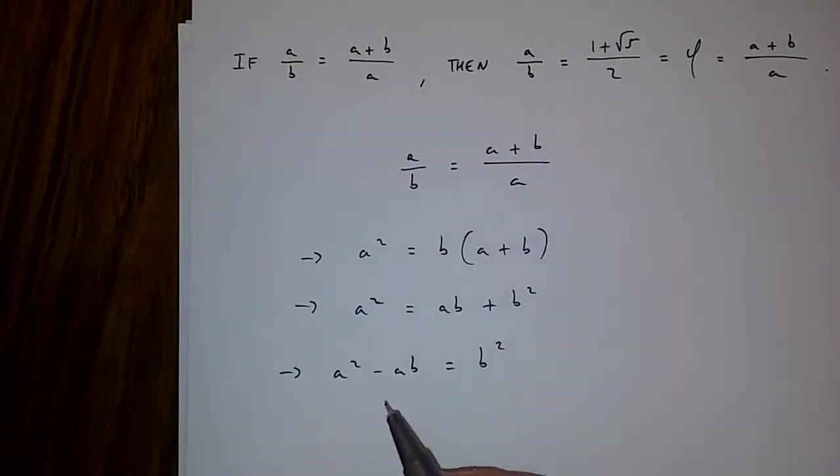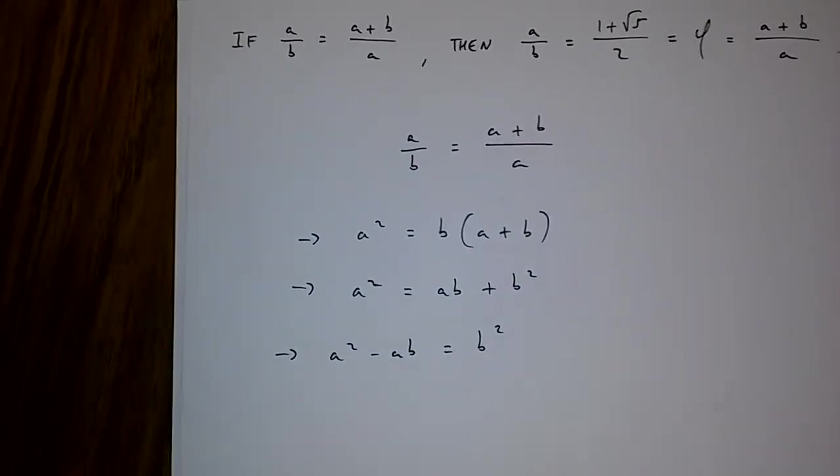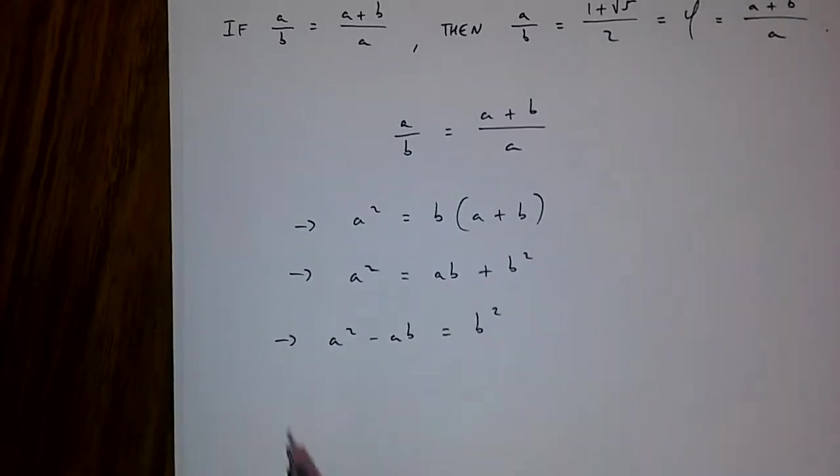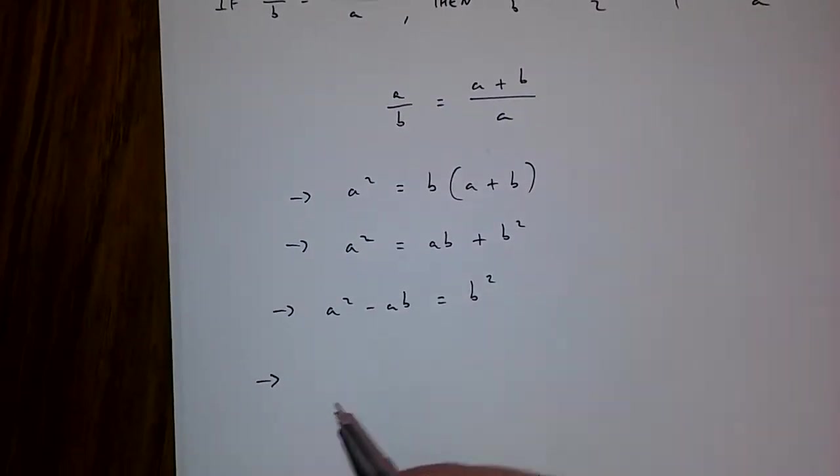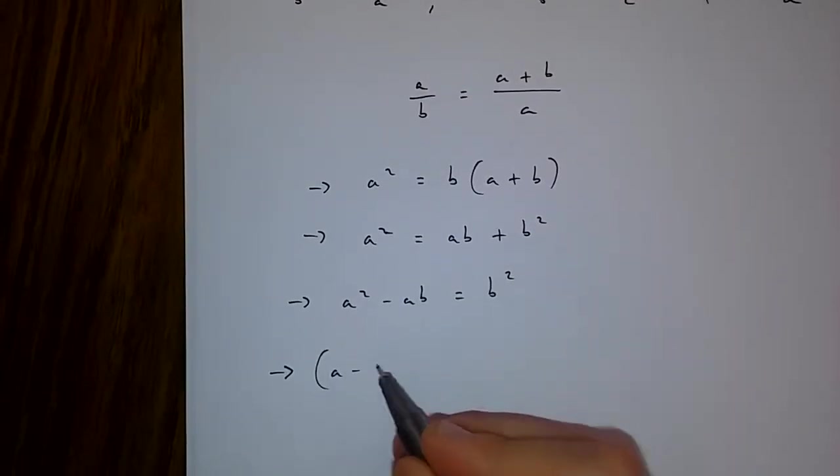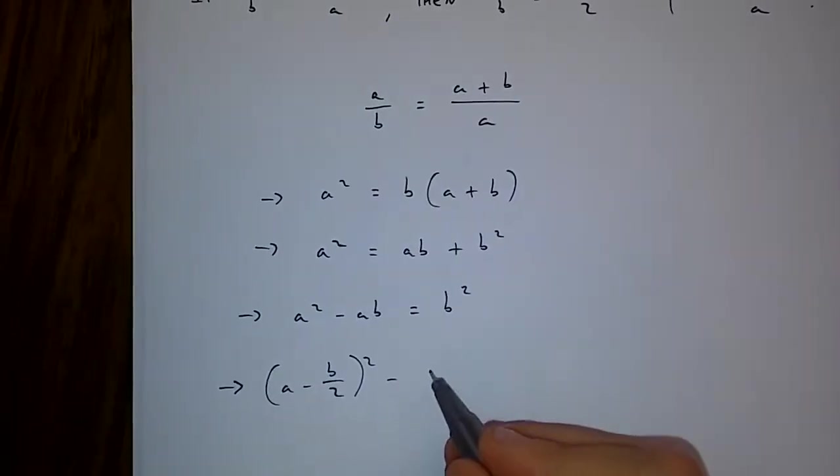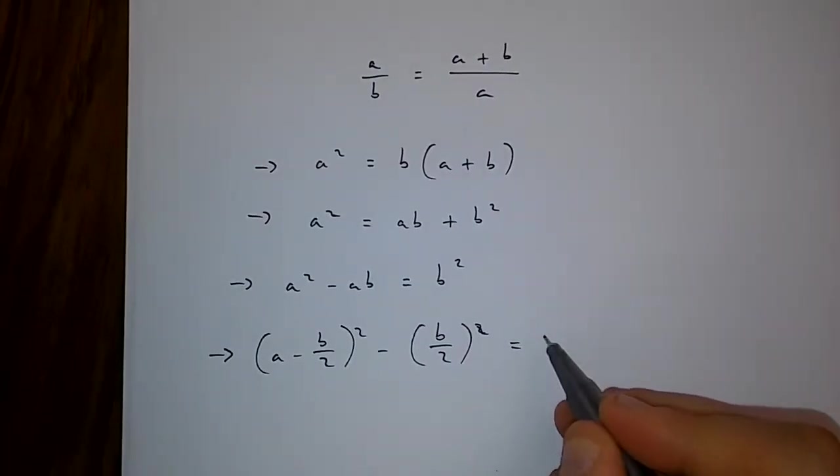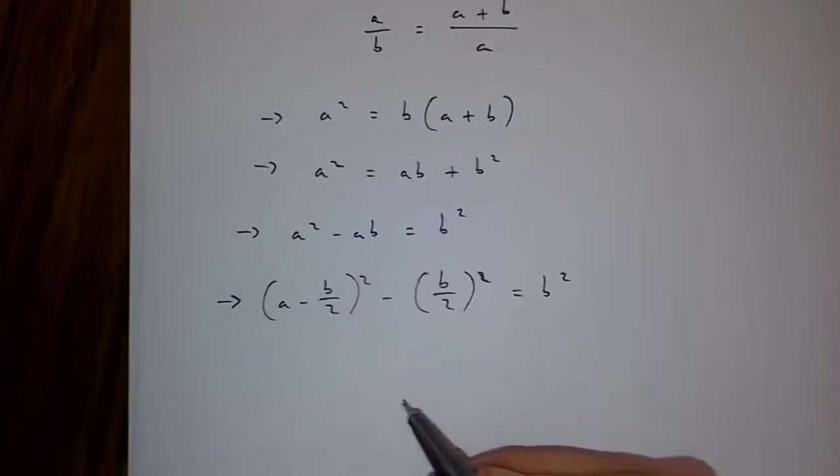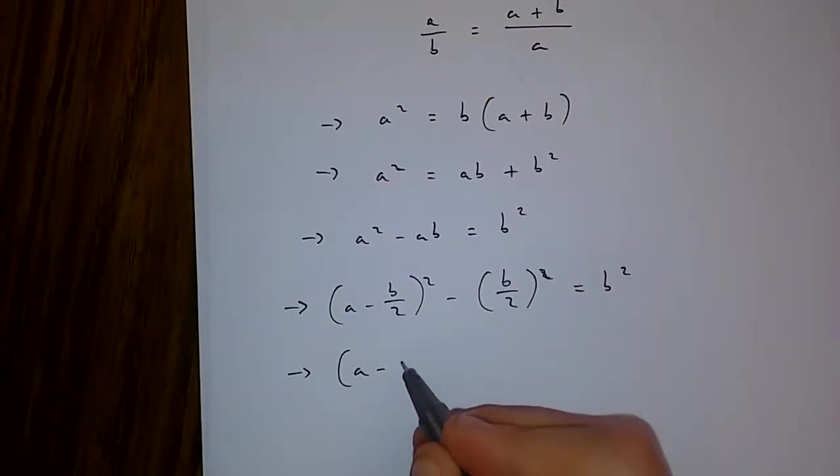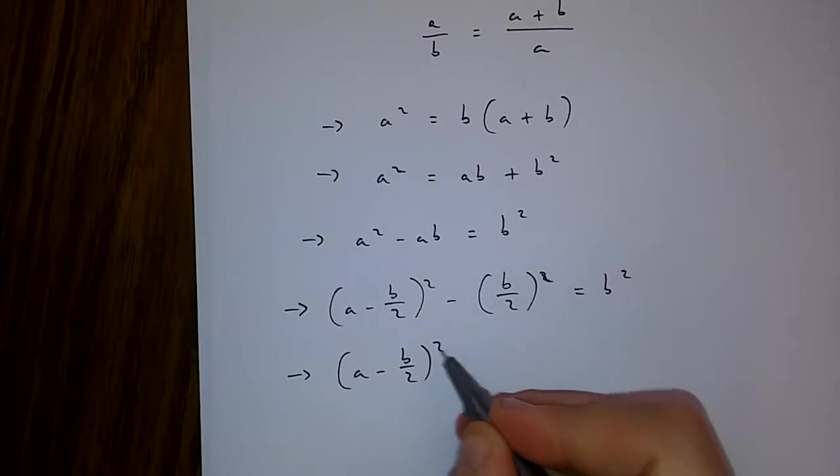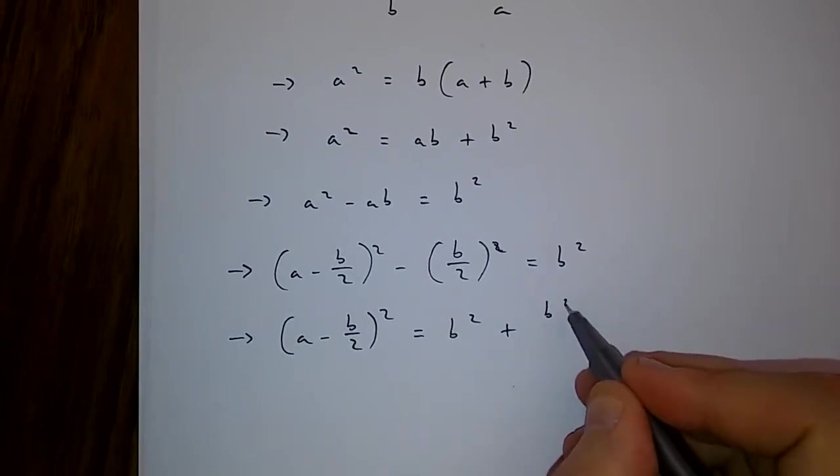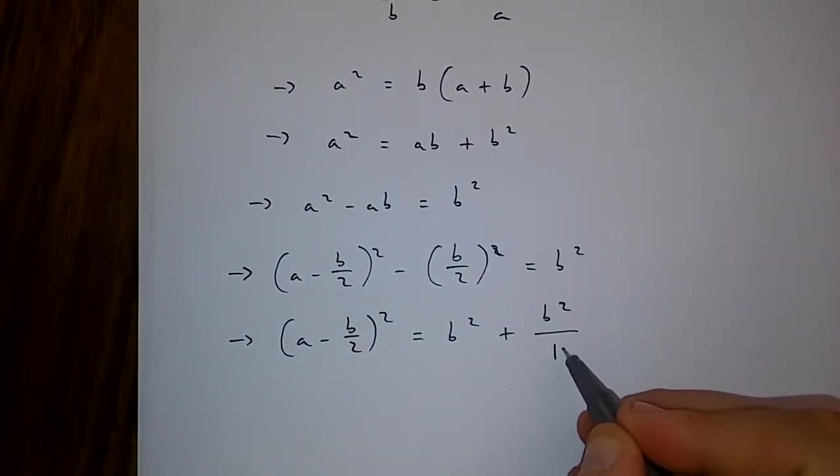Okay, because I've got this, I now have to complete the square to get the value of a/b. If I complete the square, I get (a - b/2)² - (b/2)² = b². This means that (a - b/2)² is equal to b² + b²/4.